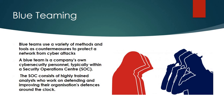Blue teaming is the opposite of red teaming. The blue team is also known as the SOC team. If you want to be a security analyst, you should know the defensive and mitigation processes against attacks. Blue teams use a variety of methods and tools as countermeasures to protect the network from cyber attacks. They implement SIEM tools — such as QRadar, Splunk, or others — to capture all traffic and identify whether it is malicious or suspicious, improving the mitigation process.